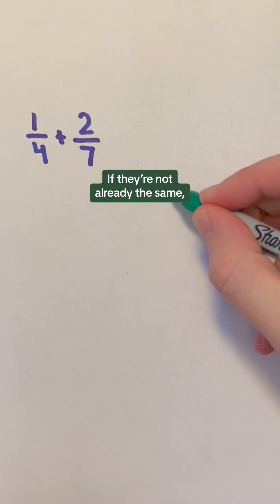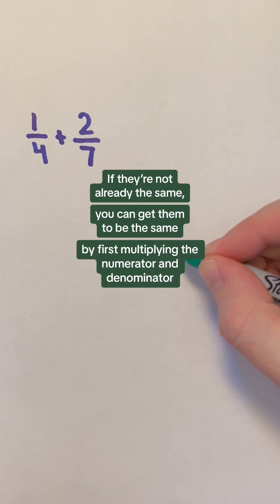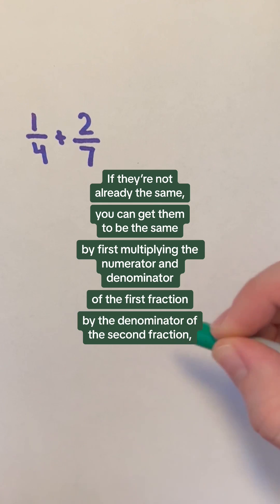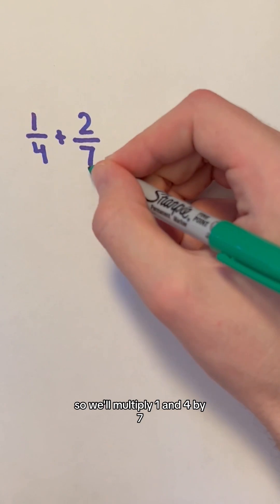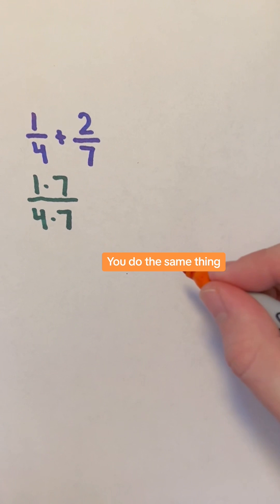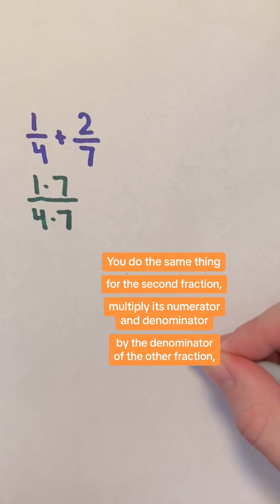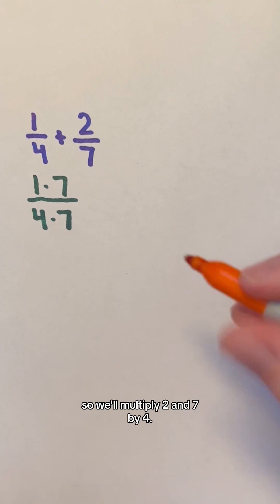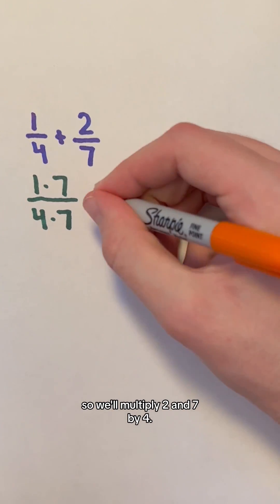If they're not already the same, you can get them to be the same by first multiplying the numerator and denominator of the first fraction by the denominator of the second fraction. So we'll multiply 1 and 4 by 7 in this example. You do the same thing for the second fraction, multiply its numerator and denominator by the denominator of the other fraction, so we'll multiply 2 and 7 by 4.